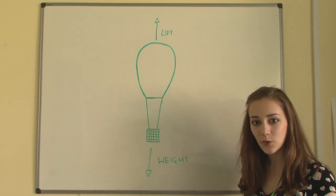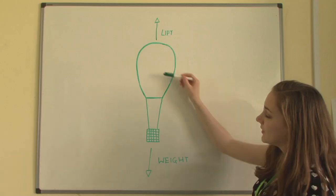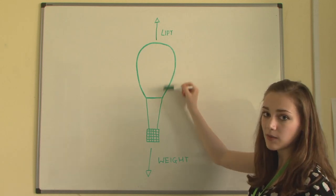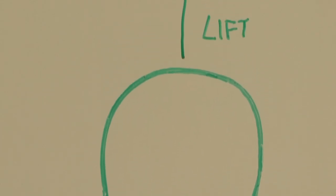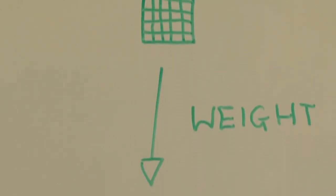In a hot air balloon, the forces acting are lift and weight. When the air in the balloon is heated by the burner, it expands and becomes less heavy so it moves upwards, providing the lift. The weight comes from the pull of gravity on the basket.